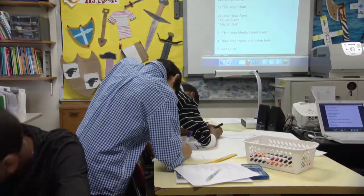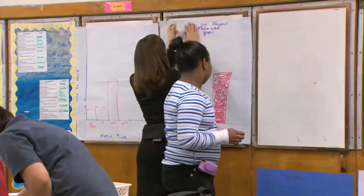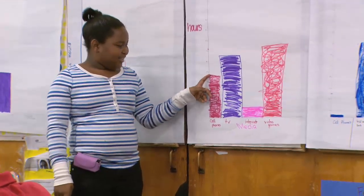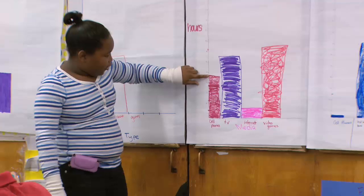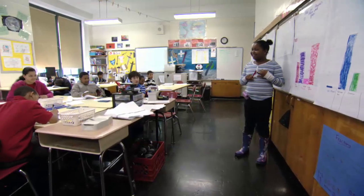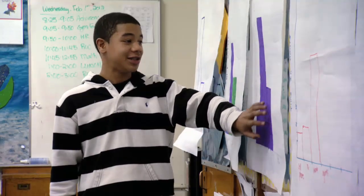Alicia, come up and explain your media use, please. We use cell phones like 466 minutes, so that was almost five hours on cell phones — texting, calling, and games on the phone. TV is six and a half hours. We watch a lot of TV. Marie? I thought internet was gonna be the longest — that's serious — it's like second to shortest. TV and DVD, I watch like five hours.